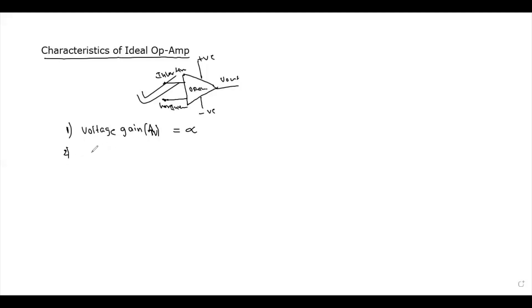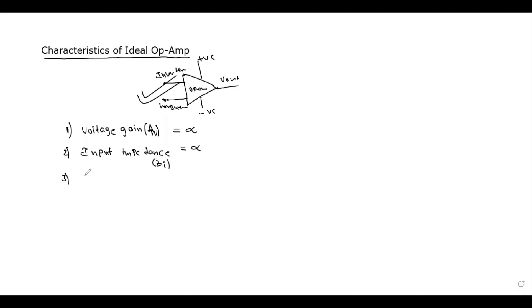Second characteristic: input impedance. Input impedance is denoted with Z suffix i. Input impedance is also infinity.